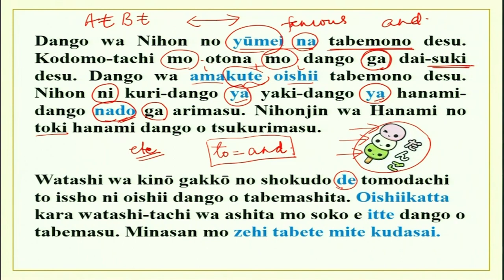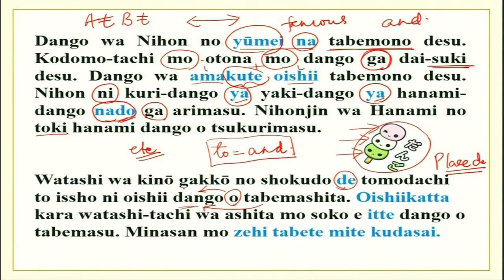You just heard the kaiva and I am sure you could understand most of it. Let us see what is new today. We have done the particle O as well, and particle DE shows the object and direct relationship to the action. The action here is tabemashita.